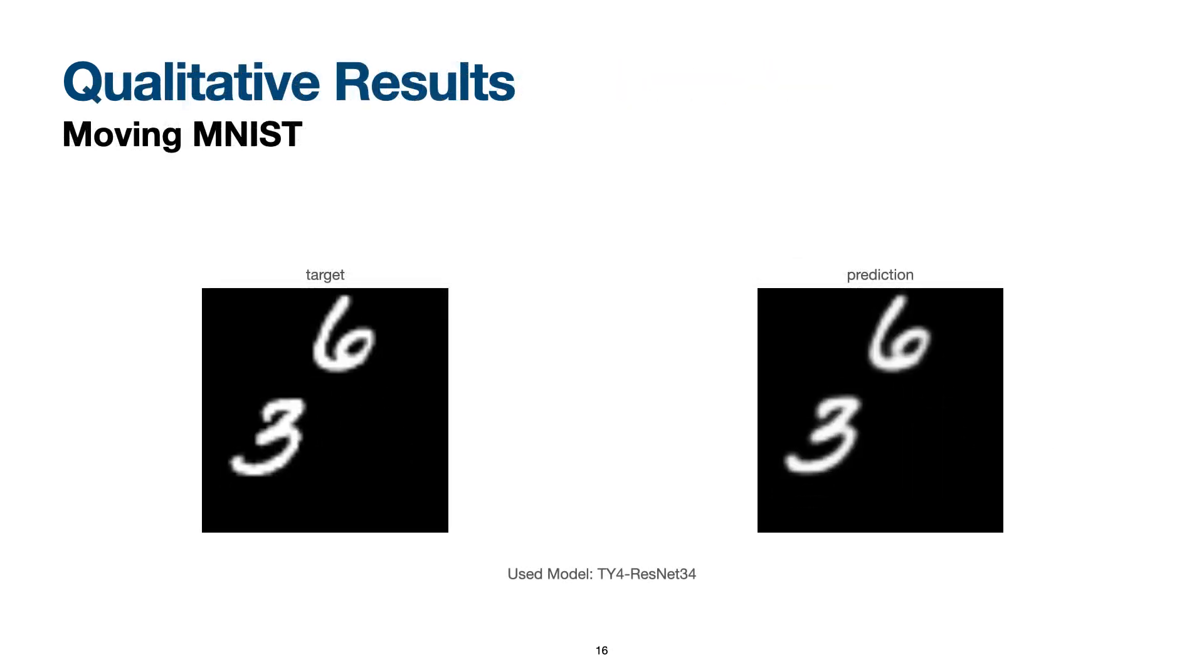Here you can see some qualitative results on our datasets. The left GIF is displaying the target and the right one is for the model prediction.